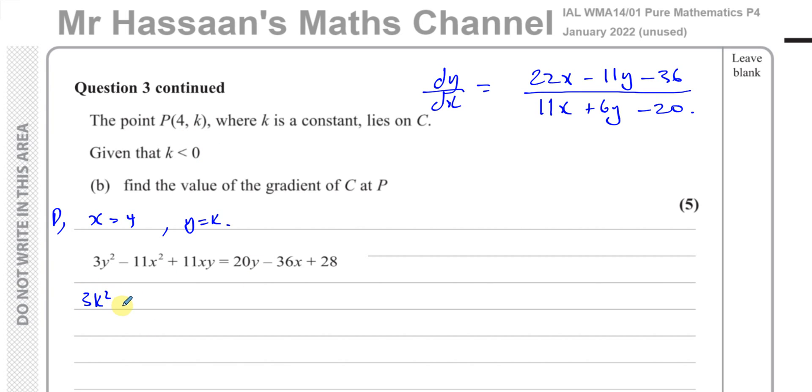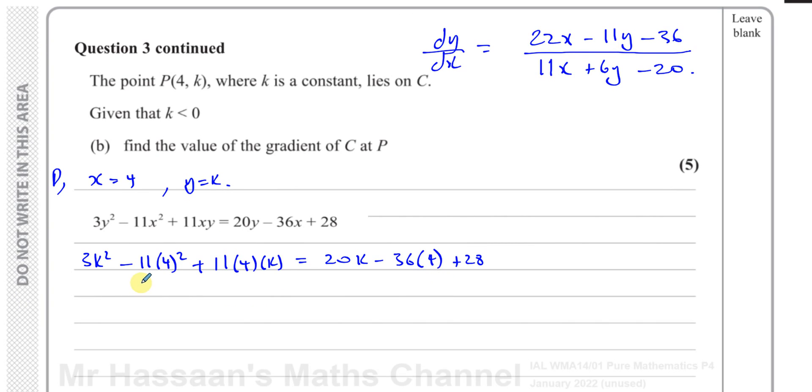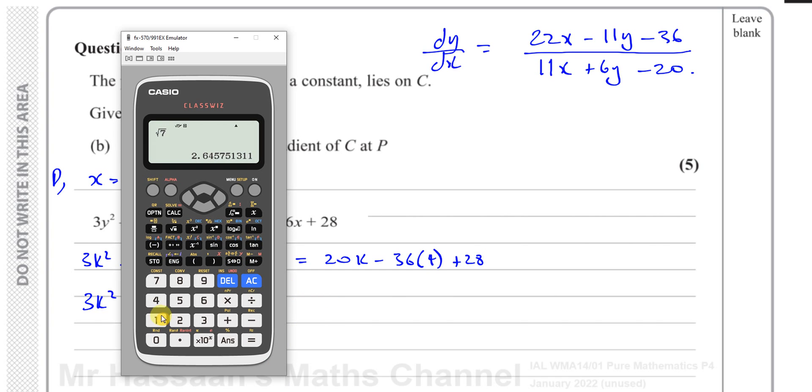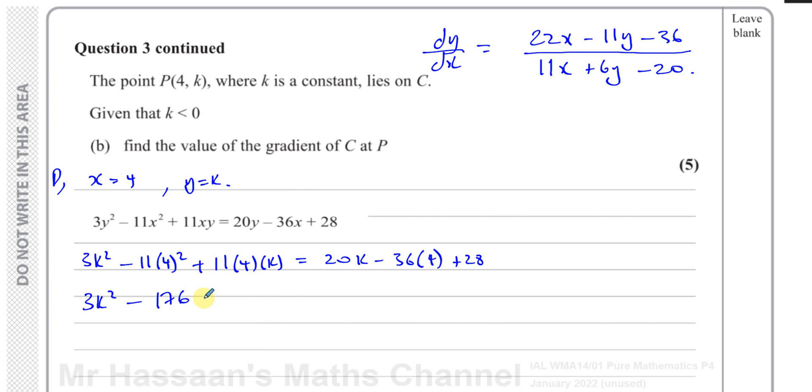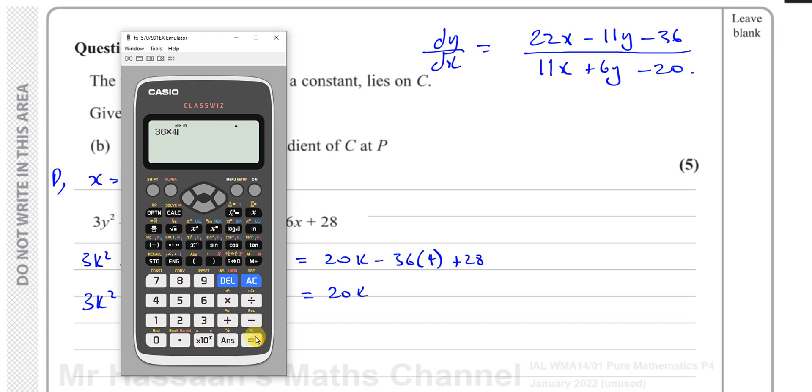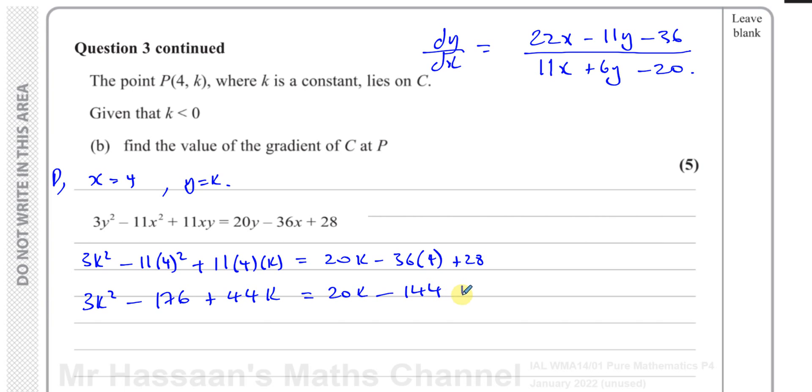So this is 3k² - 11(4²) + 11(4)(k) = 20k - 36(4) + 28. So I can try to rearrange this. So 3k² minus, that's 16 times 11, which gives you 176, plus 44k = 20k. And 36 times 4 gives you 144, and plus 28.